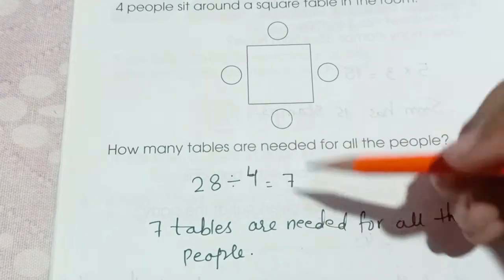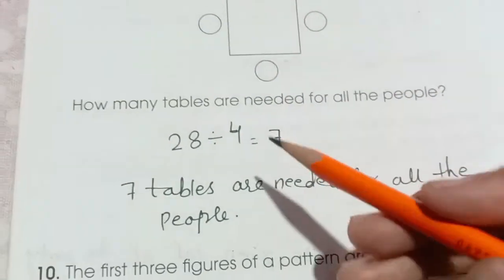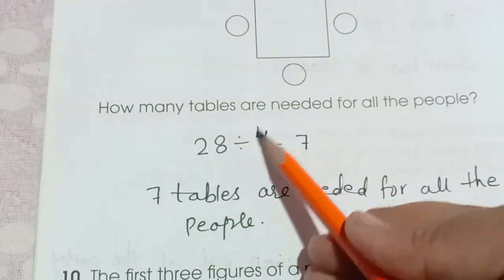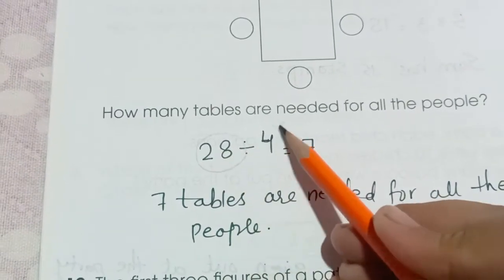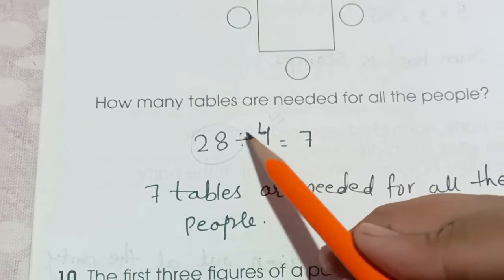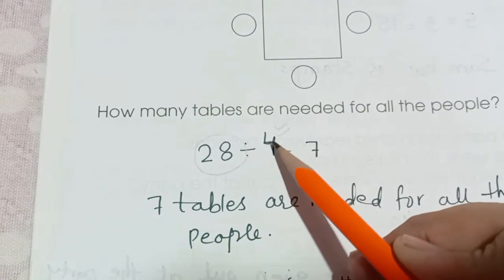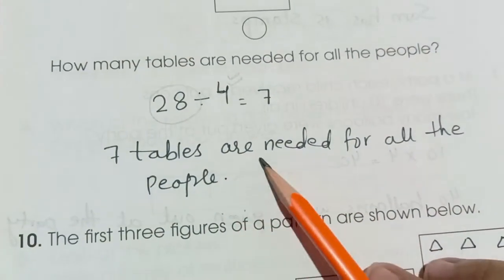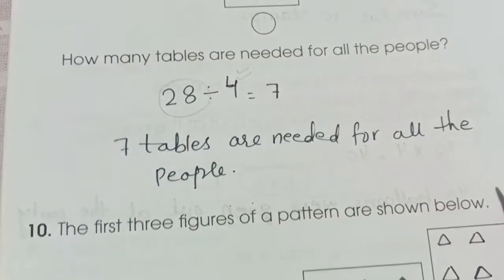28 divided by 4. 4 sevens are 28. When we have the division, it means that we have to find that number in the given table. So 28 in the table of 4. 4 sevens are 28. 7 tables are needed for all the people.